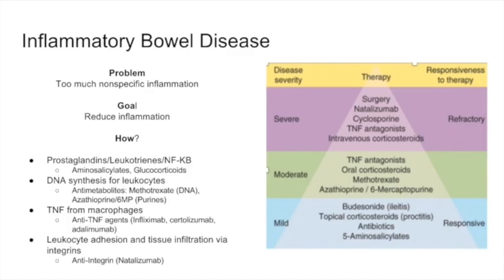We are going today to be covering a bunch of GI issues, and the first one is inflammatory bowel disease. In inflammatory bowel disease — which includes Crohn's and ulcerative colitis, as you've covered in pathology — the problem is really too much inflammation. The problem with this inflammation is that it's very nonspecific; we can't put our finger on what exactly is causing it. The goal of pharmacotherapy is to reduce this inflammation.